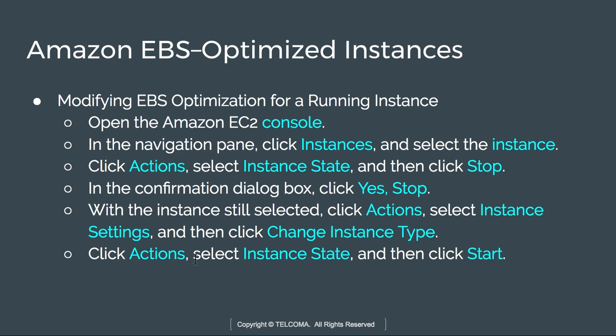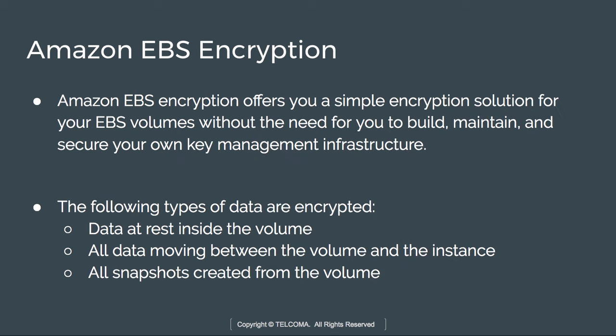If you need to modify an existing instance, go to Actions, stop the instance, make the changes, then start it again. Now, regarding encryption: Amazon EBS encryption uses AWS KMS — the Key Management Service — where we have a Customer Master Key (CMK). Encrypted volumes and any snapshots created are protected with the customer master key.